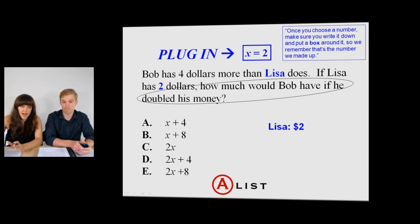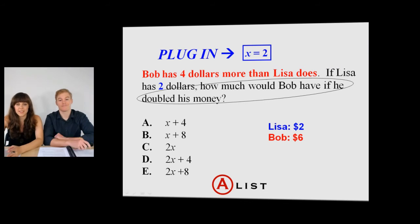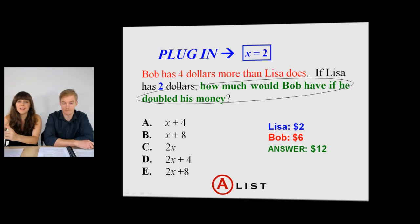So, oh great, if Lisa has two dollars, how much would Bob have if he doubled his money? Well, if Lisa has two dollars, let's do the math out for the beginning of that problem. Bob has four dollars more than Lisa does. What does Bob have? Most of your students can add two and four. Hey, Bob's got six. How much would he have if he doubled his money? He would have twelve.